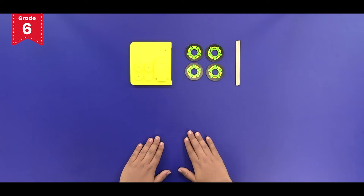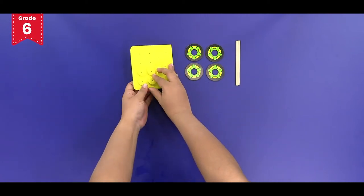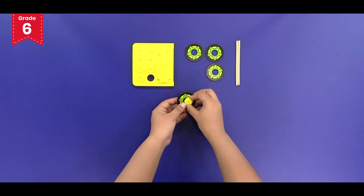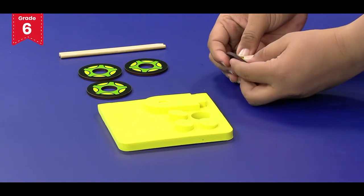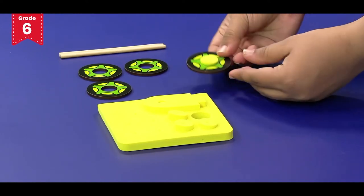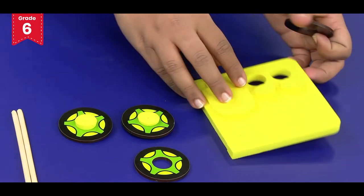Now we have to assemble the wheels of the car. Take one foam washer and insert it into the wheel. Now do the same with the other three wheels.